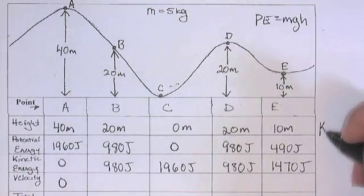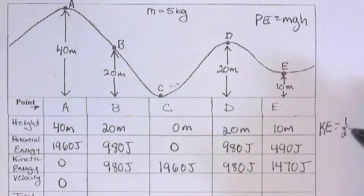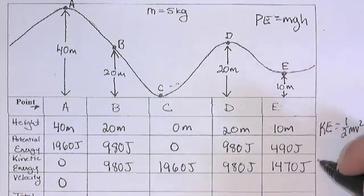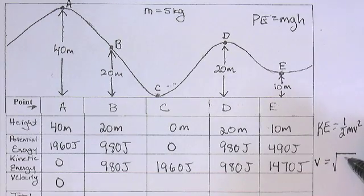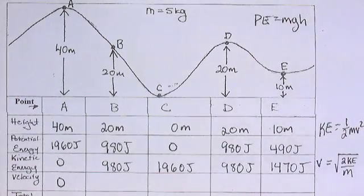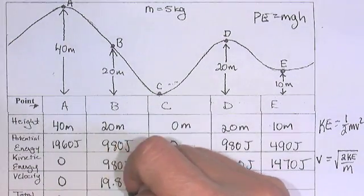To get the kinetic energy, or the velocity from the kinetic energy, since kinetic energy is 1 half mv squared, we can solve for velocity, which is equal to the square root of 2 ke divided by m. So, let's do that to get the kinetic energy, or the velocity of the two cars that are 980 joules. So, 980 times 2 is 1960, divided by 5 equals square root. So, 19.8 meters per second.